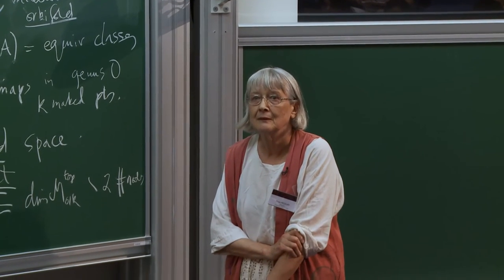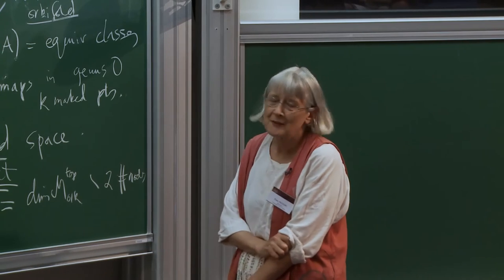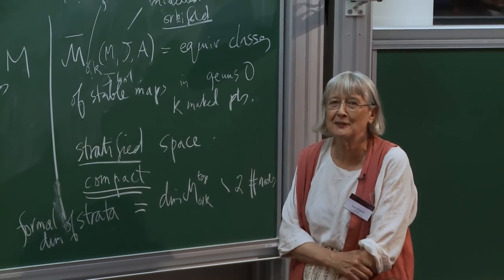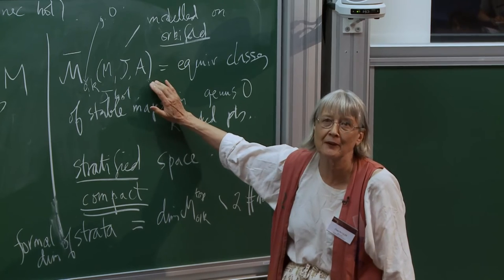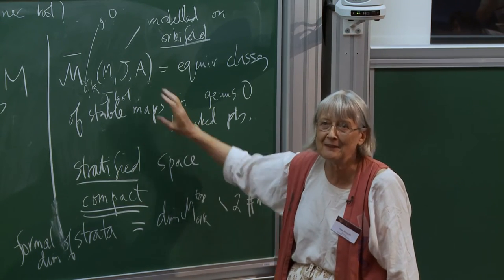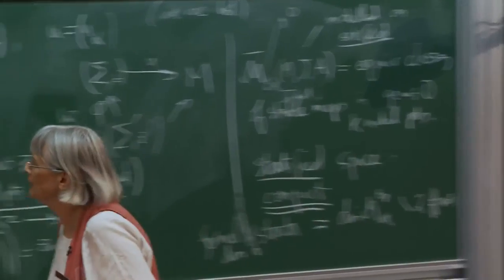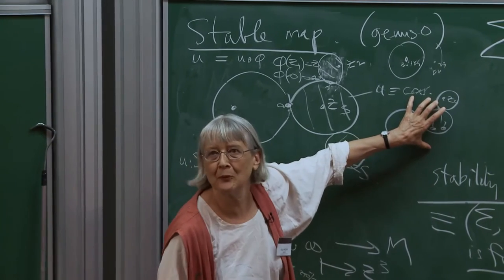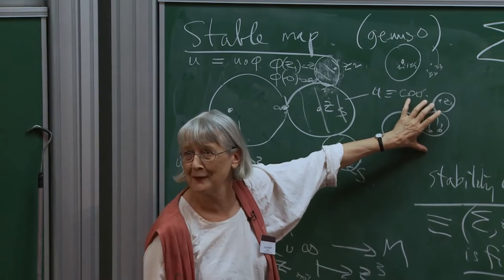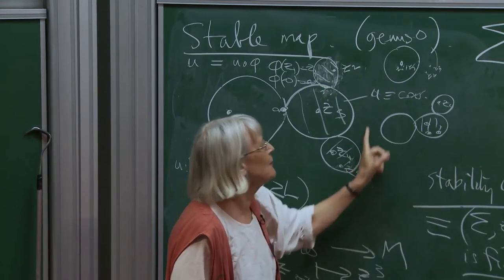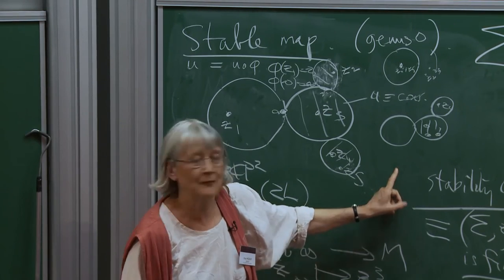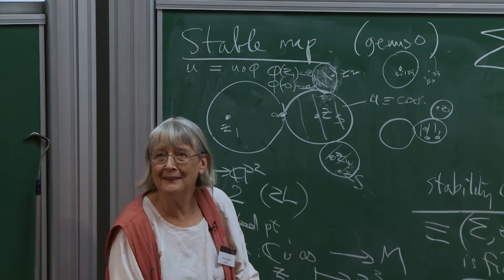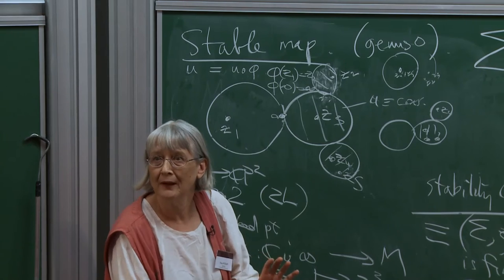The Gromov topology uses something called gluing: if you have a nodal domain, nearby things nearly have the nodes but don't quite. For a single node, you take S² minus a disk of size ε from each sphere and glue their boundaries with a twist θ — giving a complex gluing parameter ε·e^{2πiθ}. When ε = 0 you have the bubble; when ε is slightly positive the domains are joined. Using cylindrical coordinates, you cut off at some point and join the maps by interpolation — getting an almost-holomorphic map, then use a Newton process to make it holomorphic.